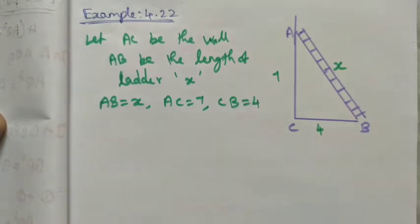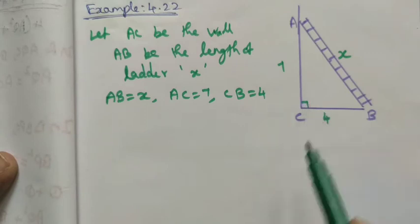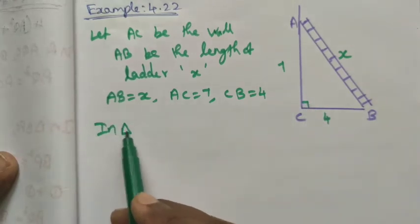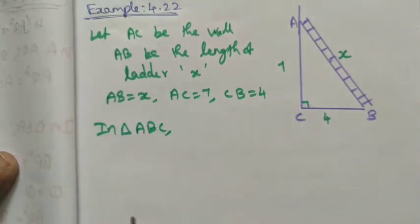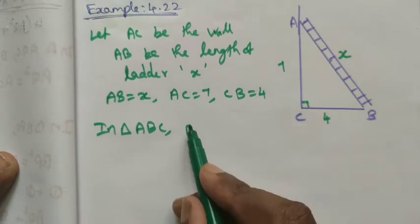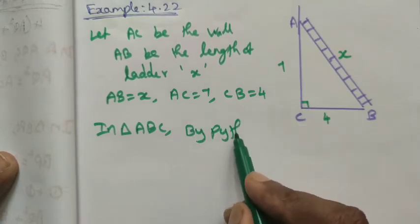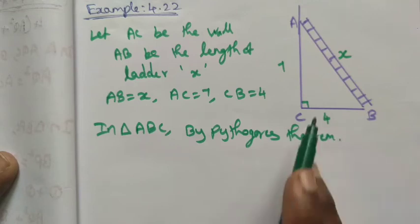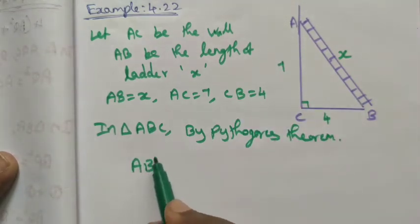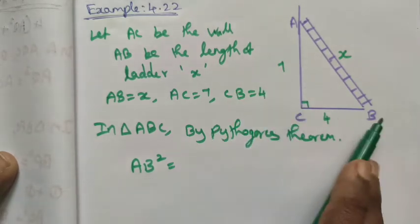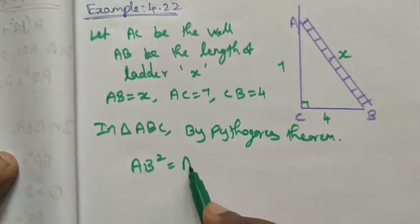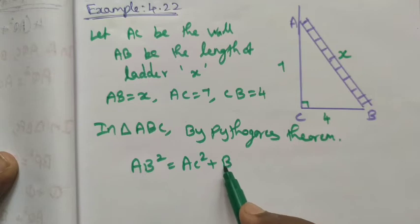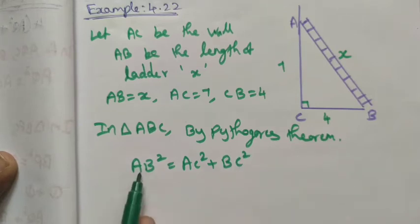AB equals x, AC equals 7, CB equals 4 feet. Clearly it is a 90-degree angle. In triangle ABC, by Pythagorean theorem, we can write the formula: AB² equals the sum of squares of the other two sides, AC² plus BC².